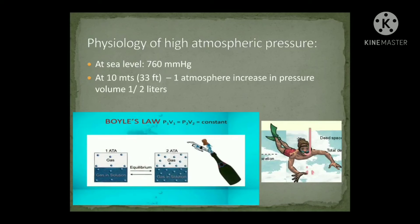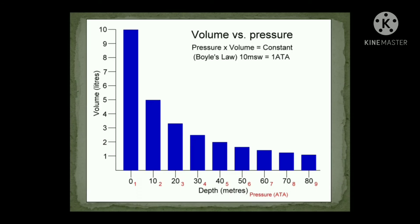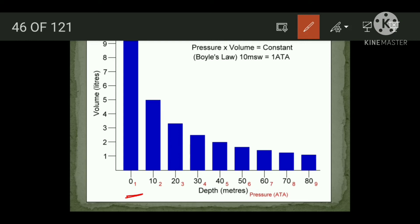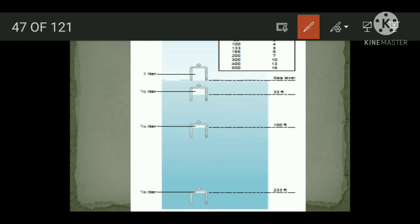At 10 meters depth, 1 atmosphere increases, so it becomes 2 atmospheric pressure. When pressure becomes 2 atmospheres, volume becomes half — pressure times volume equals a constant, so as pressure increases, volume decreases. At sea level, if gas volume is 1 liter, at 33 feet or 10 meters depth the volume becomes half a liter. At 100 feet or 40 meters depth, volume becomes one-fourth.